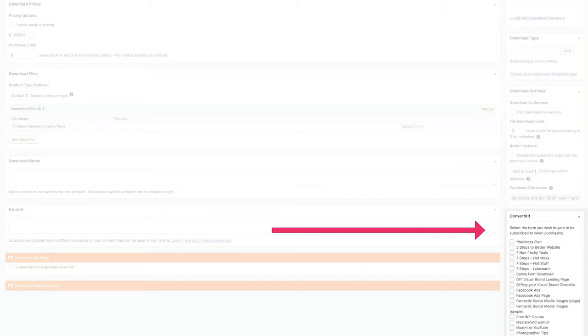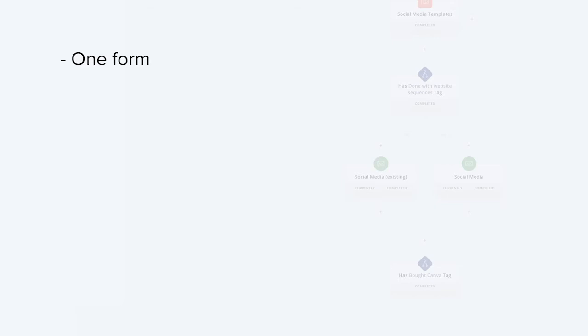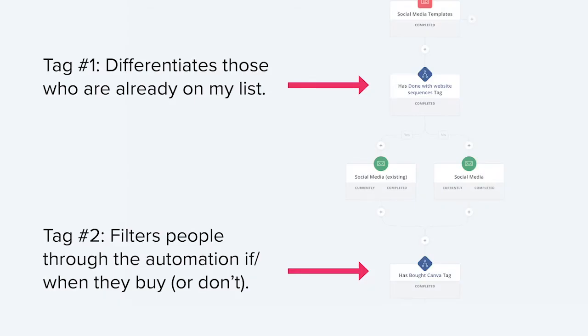On the product download page, you can tag people once they buy your product, which we'll see here in just a little bit. For my passive income automation in ConvertKit, I set up one form, two tags, and five sequences. I have two tags because one differentiates people who are already on my list, so they get a slightly different first sequence. The second tag filters people through the automation based on if or when they purchase. This is why you need the ConvertKit add-on — when people buy, you can tag them in ConvertKit and that will change how they continue through the automation.